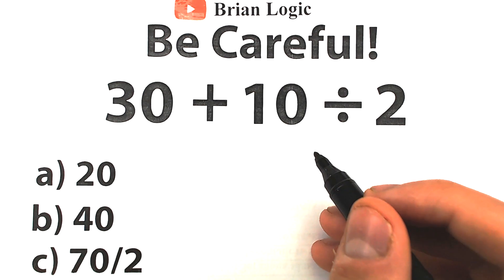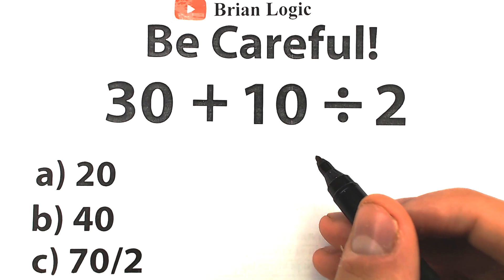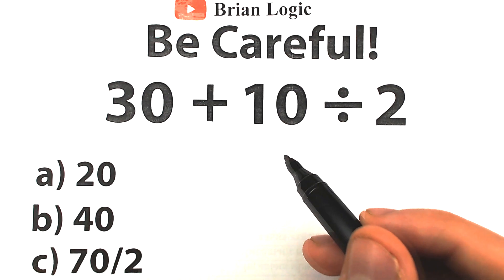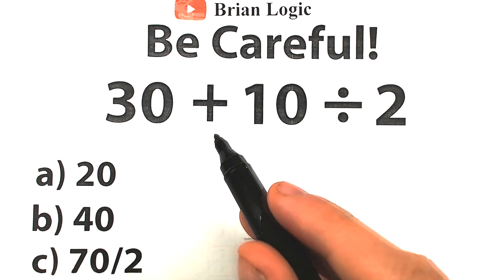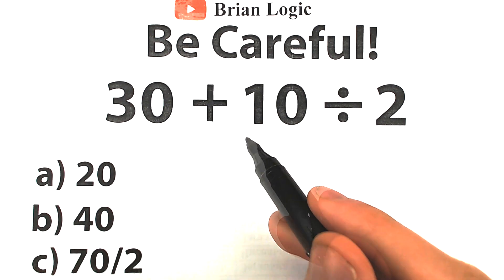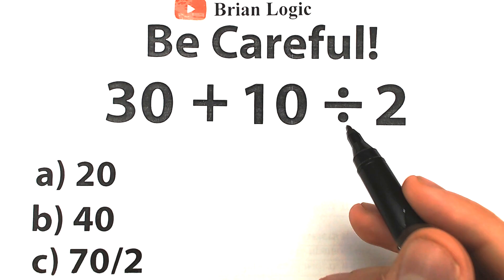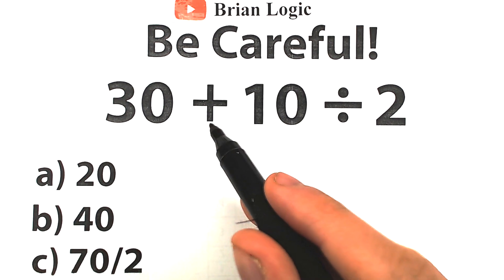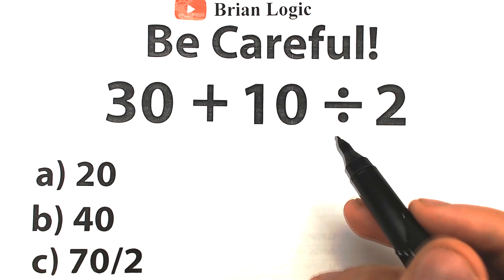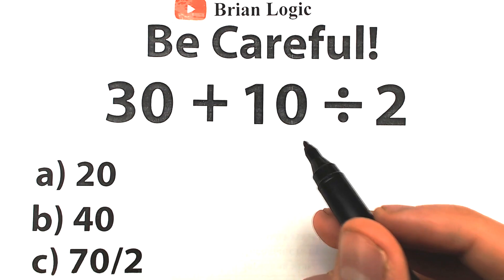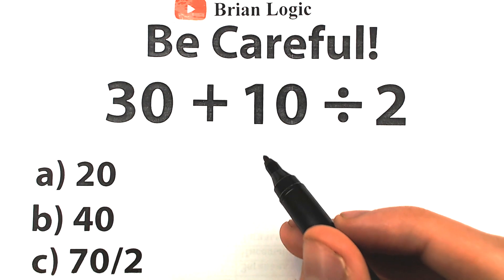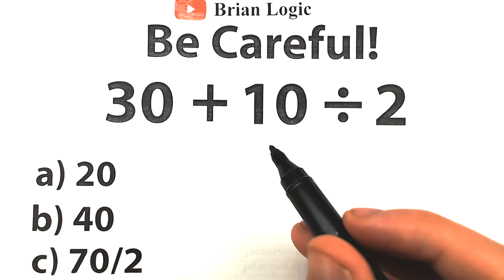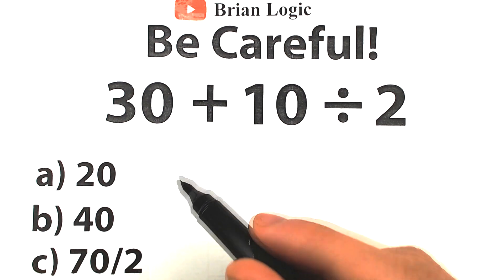I think a lot of you are going to be able to figure this math problem out. It's not that difficult. The problem is 30 plus 10 divided by 2. Seems pretty basic, seems pretty easy — we have very simple addition and division. Everyone learned this stuff in the third grade, and we want to get this down to one value.